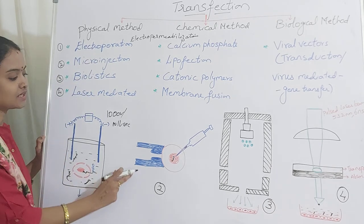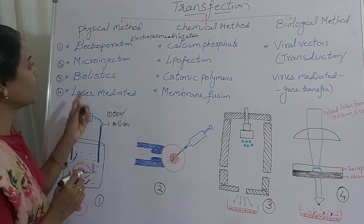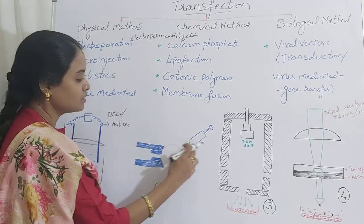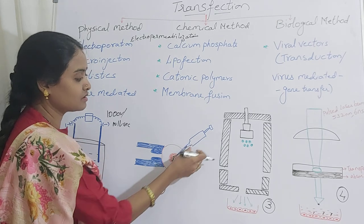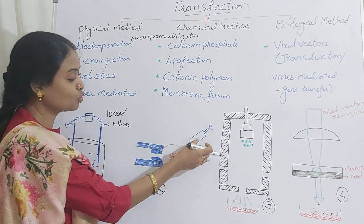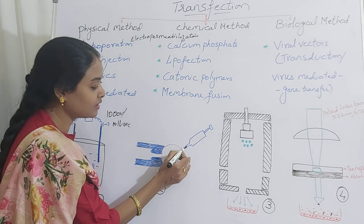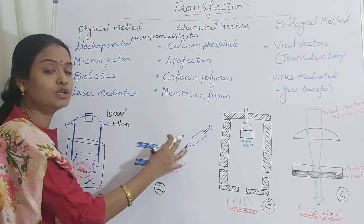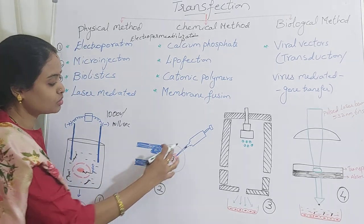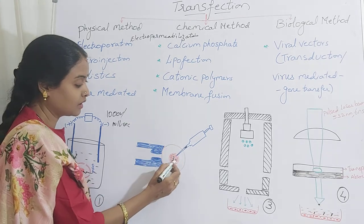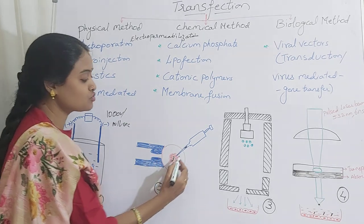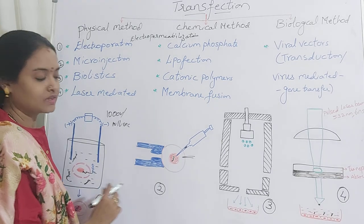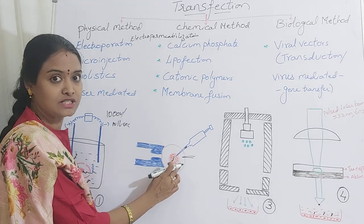The second technique is micro injection. You can see a glass syringe through which the desired DNA is injected directly into the cell. Sometimes we introduce the DNA only into the cytoplasm — that is cytoplasmic gene transfer. Whereas here it is nuclear gene transfer, where you introduce directly into the nucleus.